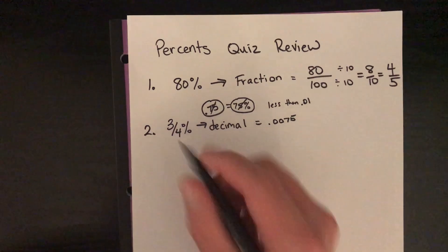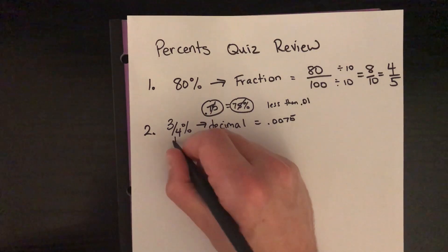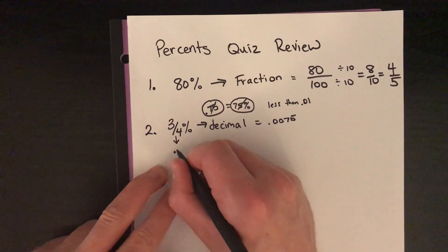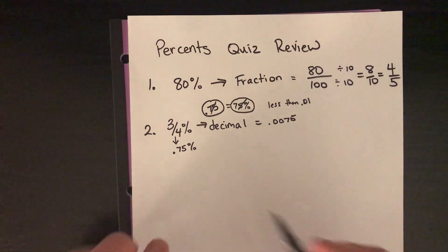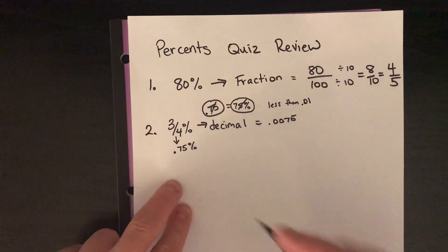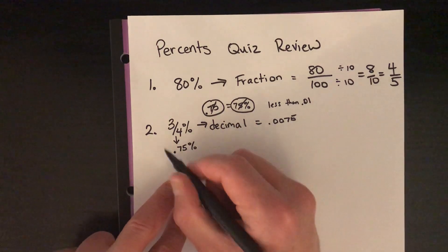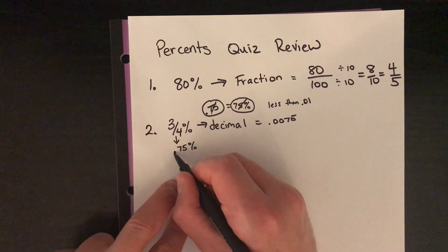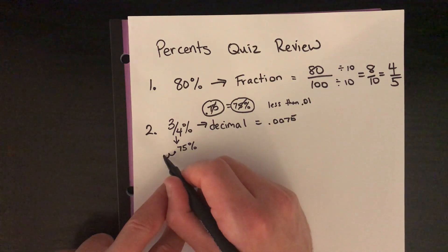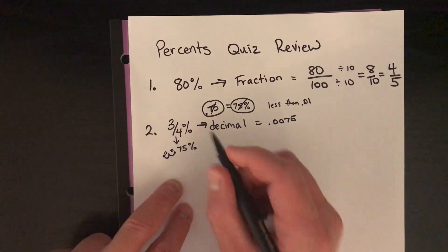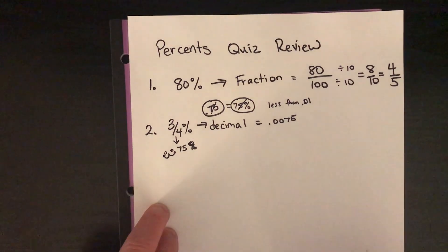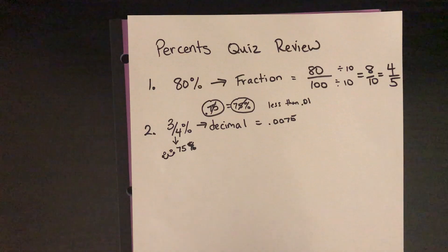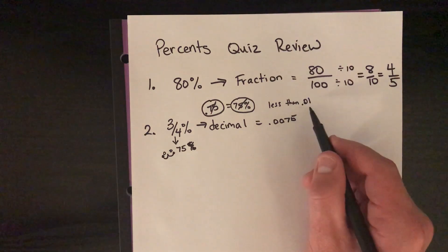Another way to see this: convert 3/4 to 0.75, so three-fourths percent equals 0.75 percent. When you convert a percent to a decimal you divide by 100, which moves the decimal point two spaces to the left. That gives you 0.0075, and the percent symbol is gone. The answer is 0.0075, just a little less than 0.01.